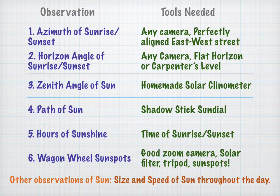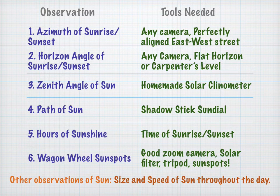There are other observations that you can make throughout the year, such as the size and speed of the Sun throughout the day. This will help determine if the Earth is a globe or if it's flat.